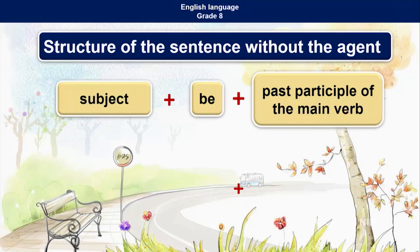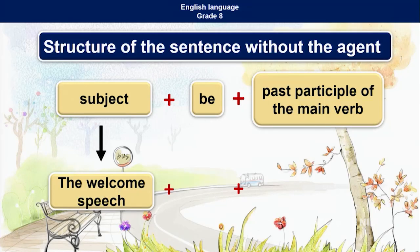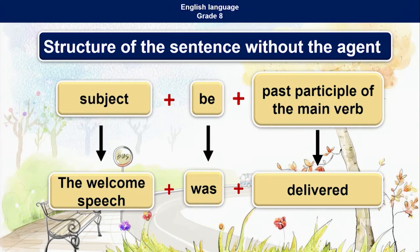Then without the agent, the structure of the sentence is: subject + be verb + past participle of the main verb. Example — the welcome speech was delivered. Even without the agent we have a complete sentence with a complete meaning. The welcome speech is singular, so the be verb is 'was'.